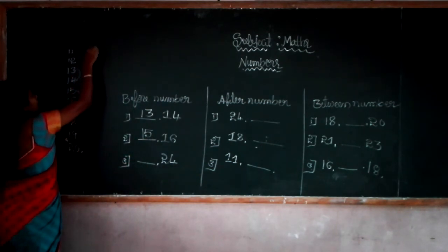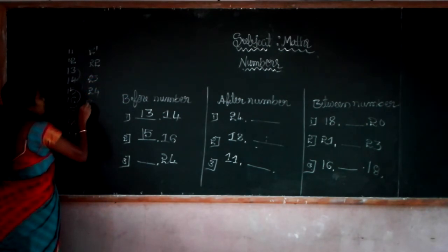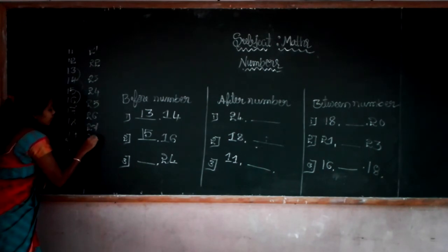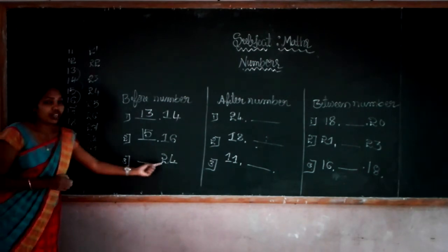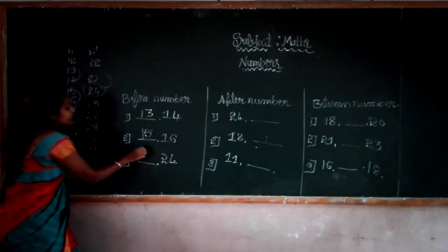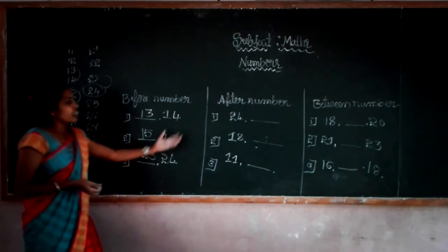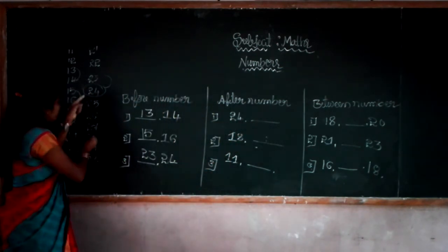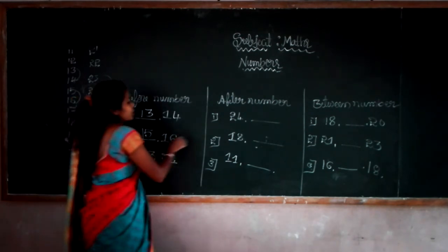Now for 24. On the number line: 21, 22, 23, 24, 25, 26, 27, 28, 29, 30. What is the before number of 24? Here is 24 — the before number of 24 is 23. Easily we find out the before number. Then the after number of 24 — the after number means forward number. After number 24 is 25.